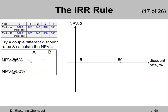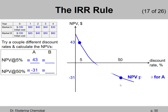If we try 5% as the discount rate for Project A, the net present value will be $43 million. If we try a 50% discount rate for Project A and compute the net present value using the cash flow keys, we get a negative $31 million net present value. We can connect these two points with a smooth curve that slopes down to the right — that's the NPV profile for Project A.